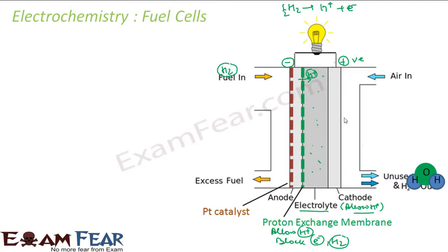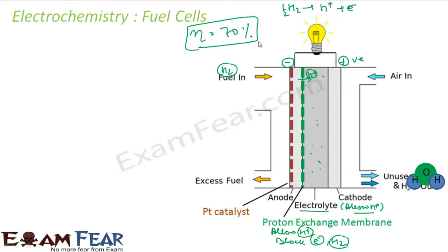The efficiency of a fuel cell is 70%, compared to a thermal power plant whose efficiency is almost 40%. It is also pollution free — a very, very good way to go green.